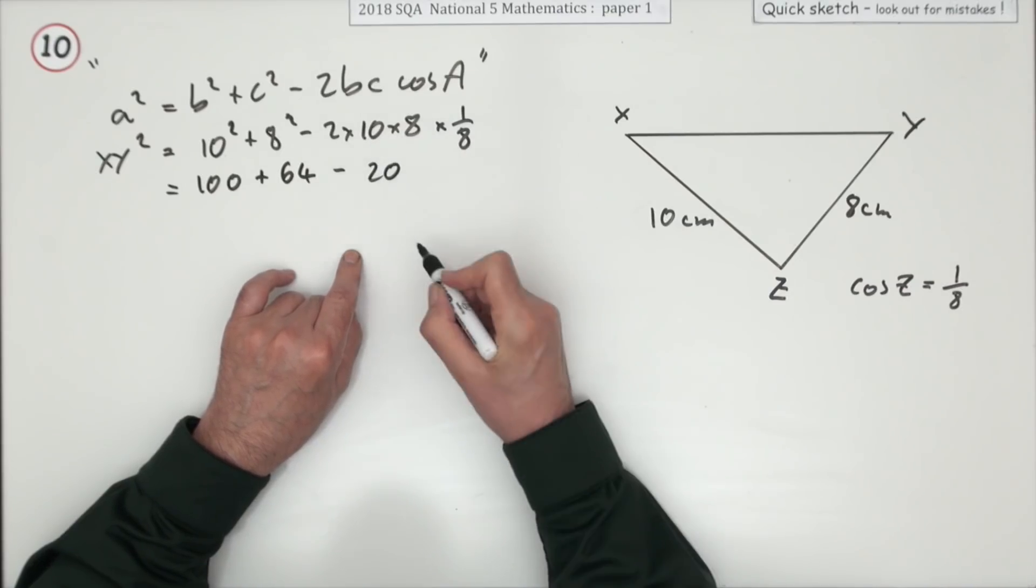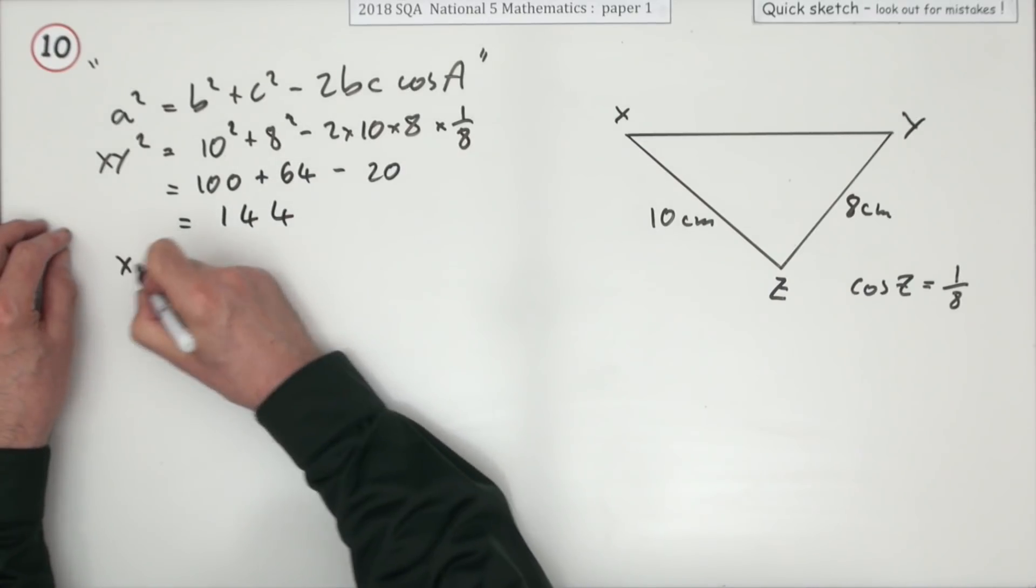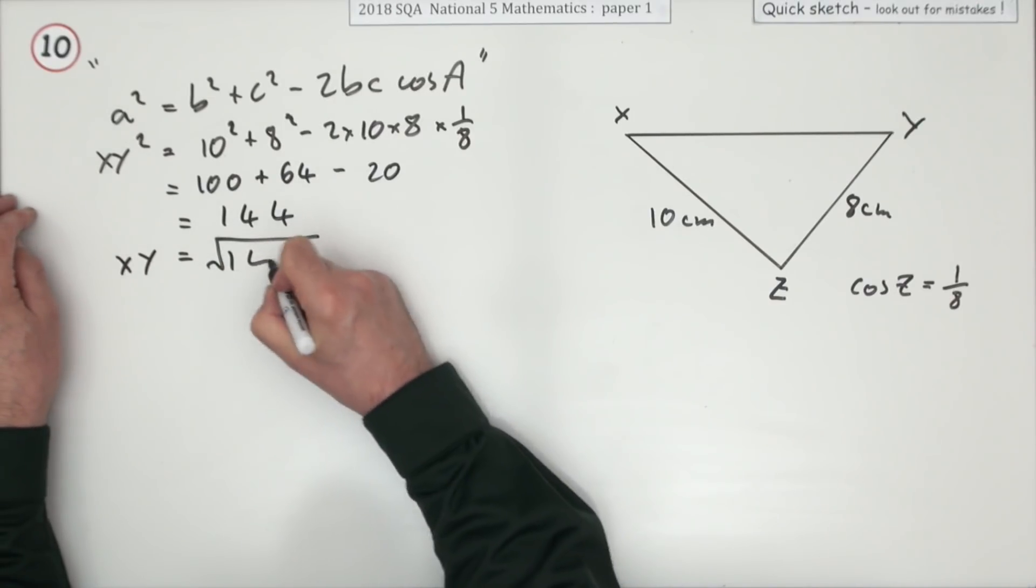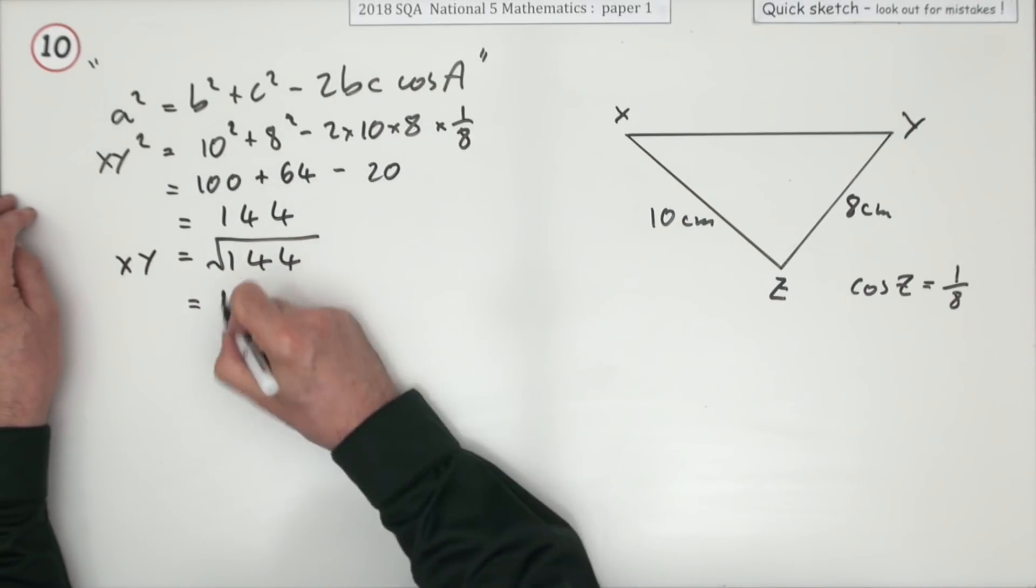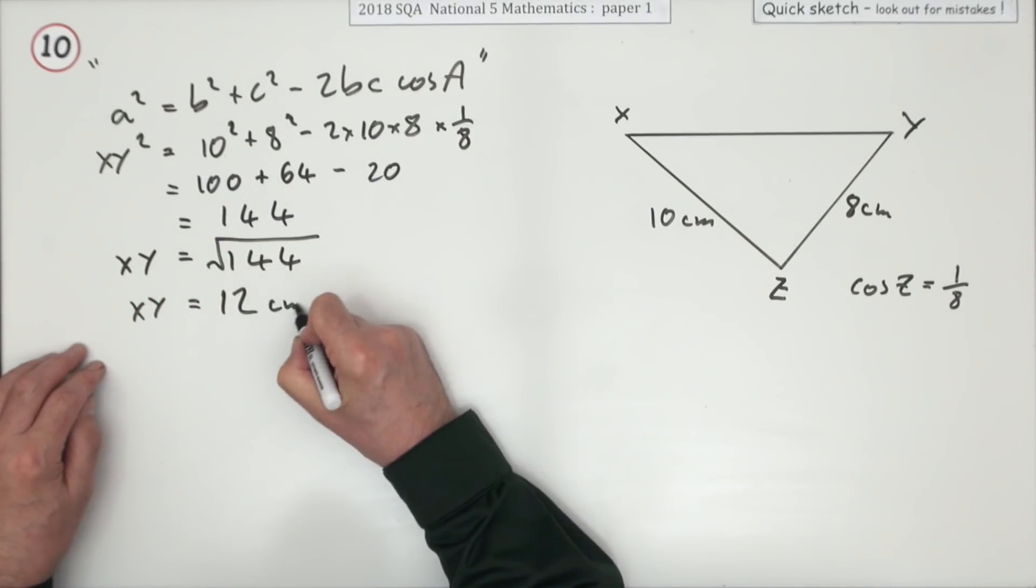So that means you've got 164 take away 20, which is 144. What could be nicer than that? Finally, don't forget to do the square root. You've got the square root of 144, which is 12. XY is 12 centimeters.